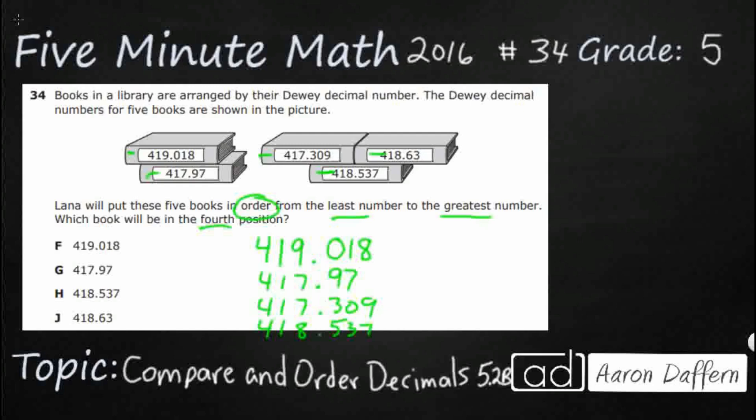And then I have got 418.63, another one that does not go to the thousandths place. And that is perfectly fine. So I have got my five numbers here.